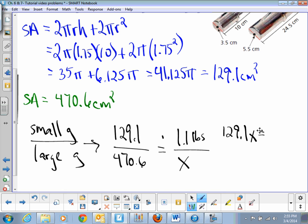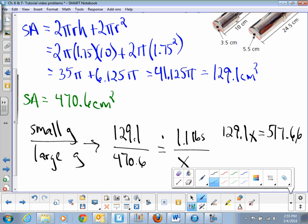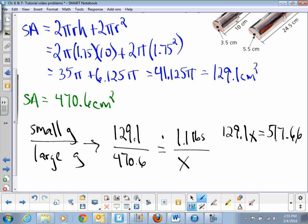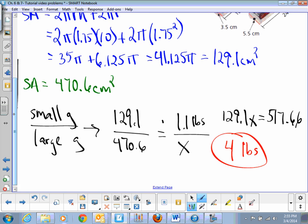So now just solve for x: divide both sides by 129.1. We're going to take that, divide by 129.1, and we're going to get 4.009, basically 4 pounds. There you have it! So ask Mr. O'Hara if you can play the gonza in orchestra.